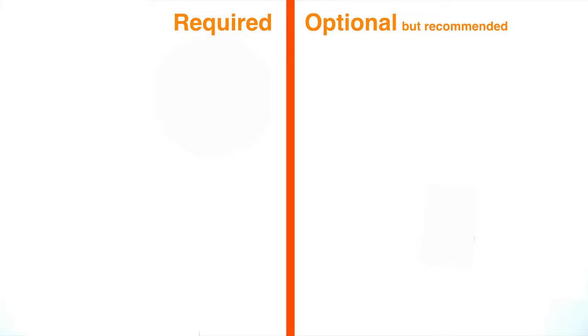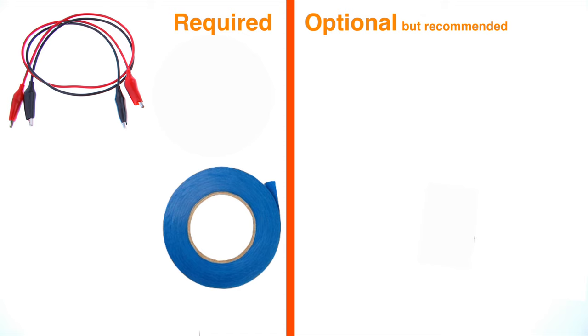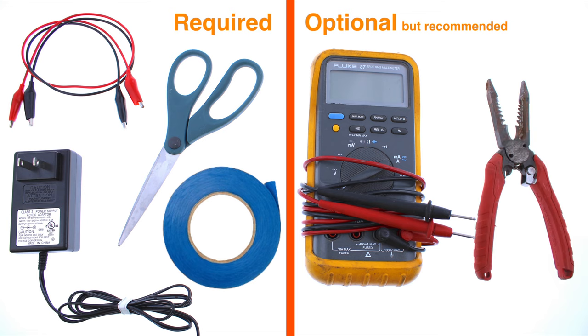So all you'll need for this project are two alligator clips, preferably red and black to tell the difference between negative and positive, any kind of tape, a pair of scissors, and a 9-volt power supply that's capable of outputting at least 2 amps of current. These next two things are optional but still recommended: a multimeter and a pair of wire strippers.